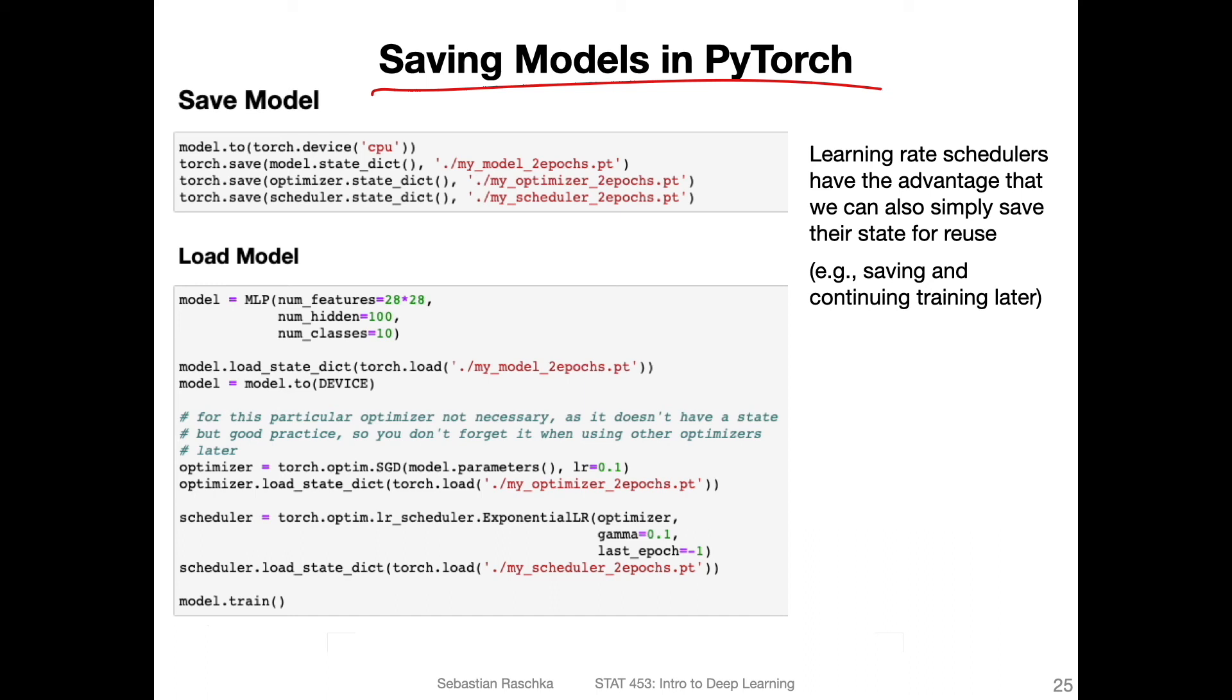So saving a model in PyTorch is actually quite simple. There are two ways of doing it, but I will only show you the recommended way. The recommended way is using torch.save on the model.state_dict(). So the model state dictionary contains all the model settings and also all the model parameters. However, if you use an optimizer that has a state, for example, if you use SGD and change the learning rate, the learning rate would be a state essentially. So you can also save that.